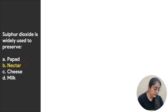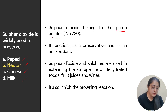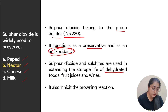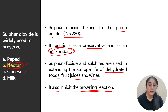The next question: sulfur dioxide is widely used to preserve — options are papad, nectar, cheese, or milk. Sulfur dioxide belongs to the group of sulfites, INS 220, and functions as a preservative as well as an antioxidant. Sulfur dioxide and sulfites are used to extend the storage life of generally dehydrated foods, fruit juices, and wines. Therefore the correct answer is nectar. Sulfur dioxide is also known to inhibit the browning reaction.